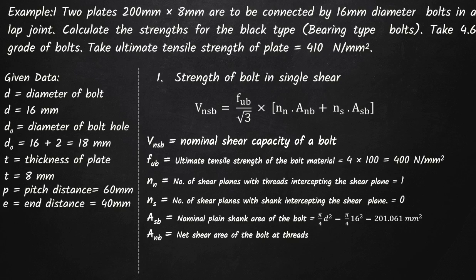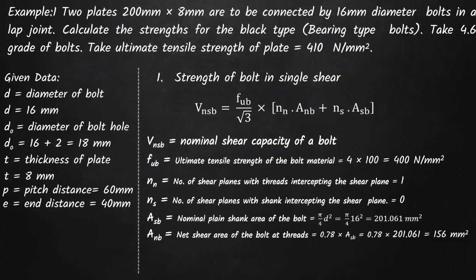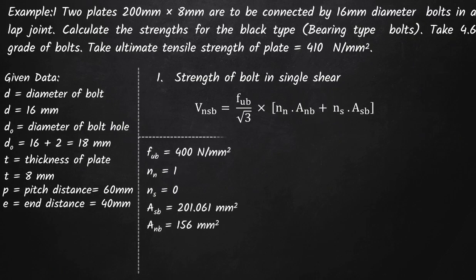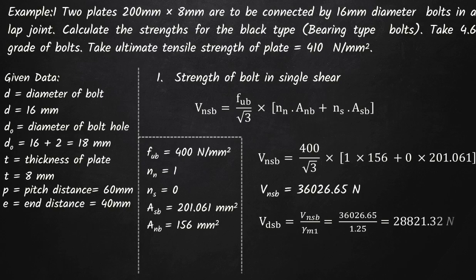In the threaded portion, the area is reduced compared to the shank area due to the threads, and as per IS800 it equals 0.78 times the shank area. Putting all the values into the formula, we get V_NSB equals 360 kN. To get the design shear strength, we divide the nominal strength by the partial factor of safety, which for bolts is 1.25. Therefore, the design shear strength of the bolt equals 360 divided by 1.25, which is 288 kN.